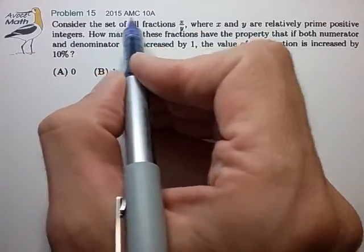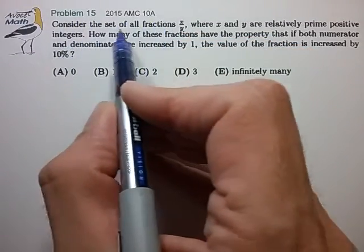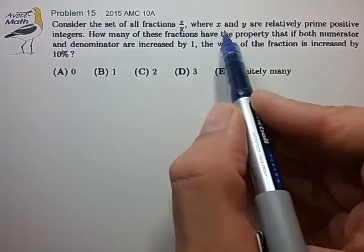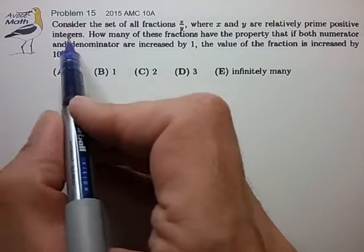Hi, this is problem 15 from the AMC 10A. Consider the set of all fractions x over y, where x and y are relatively prime positive integers.